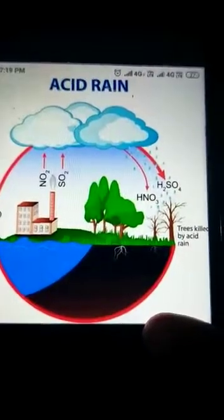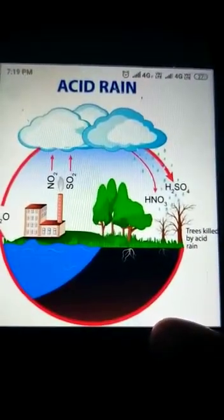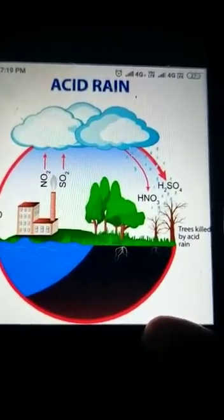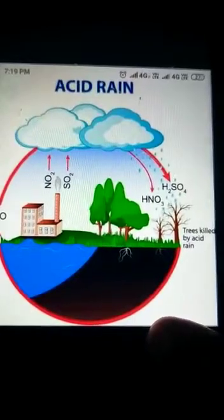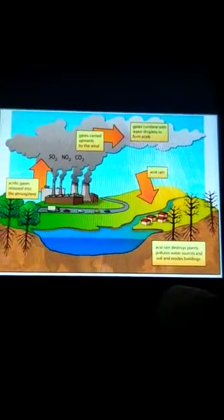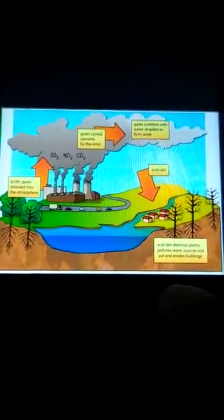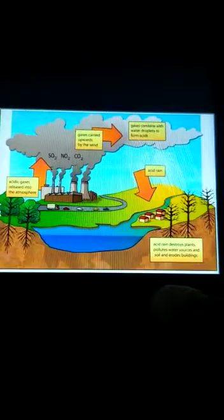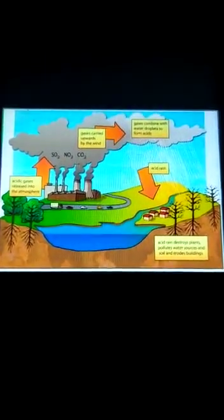Now let's talk about acid rain. Acid rain is the product of human activity like burning fossil fuels — smoke from factories and vehicles. When these chemicals released from factories mix into rain, they form acid rain. Acid rain affects aquatic life, meaning water animals, and natural vegetation.